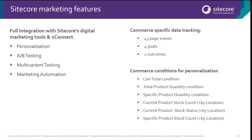Sitecore Experience Commerce 9 is fully integrated with Sitecore's digital marketing tools. That means you have the ability to personalise, run A/B tests, multivariant tests, and hook into the marketing automation functionality. On top of that, out of the box, you get 43 page events, 4 goals, and 2 outcomes, all specific for commerce data tracking.